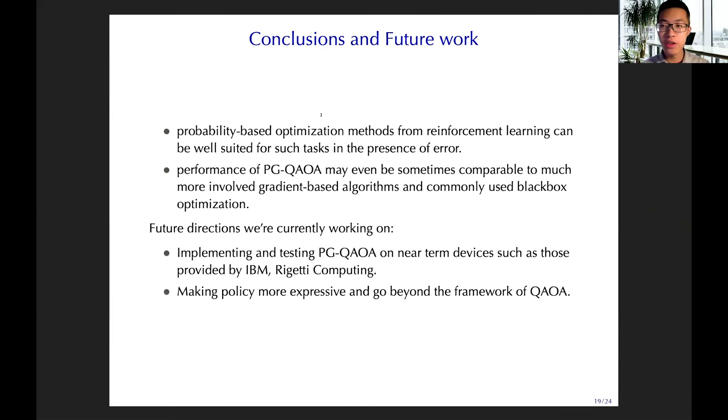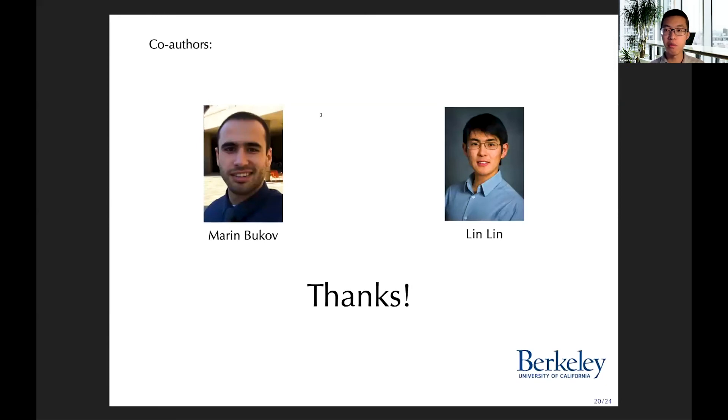So to conclude, we introduce PGQAOA algorithm and we find the policy-based optimization method from reinforcement learning is well suited for such tasks, especially with presence of error. And our PGQAOA performance can sometimes be comparable to more involved gradient-based algorithms and commonly used black box optimization. Our future direction, we are going to implement and test PGQAOA on near-term devices such as those provided by IBM. And another direction, we're also thinking about making the policy more expressive to see whether we can go beyond the framework of QAOA. I would like to thank the co-authors of this project, Marin Bukov and my advisor, Ling Lin, and thank you all for the time and attention.